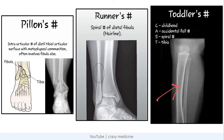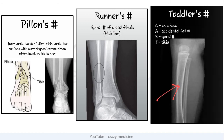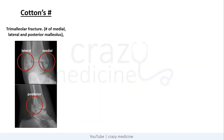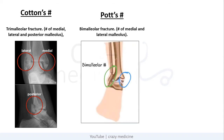Toddler's fracture can be remembered by the mnemonic CAST. Then Cotton's fracture — it is a trimalleolar fracture, i.e., fracture of the medial, lateral, and posterior malleolus. Then Pott's fracture — it is a bimalleolar fracture, i.e., fracture of the medial and lateral malleolus.